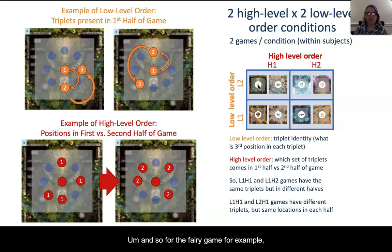So for the Fairy game, for example, it might go from the center to the bottom to the right and from the center to the top to the bottom left. But if you change the low level order condition to this Mushroom game, now you're going to see that this third position has been swapped. So now it'll go from the center to the bottom and then to the bottom left if you're in the Mushroom game.